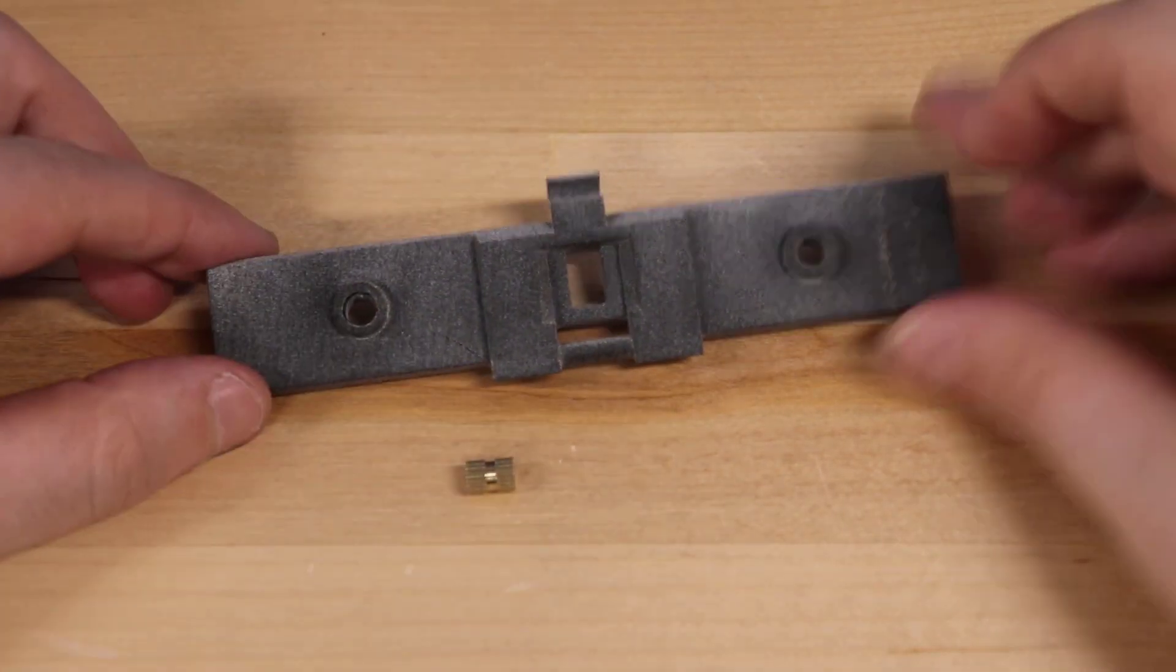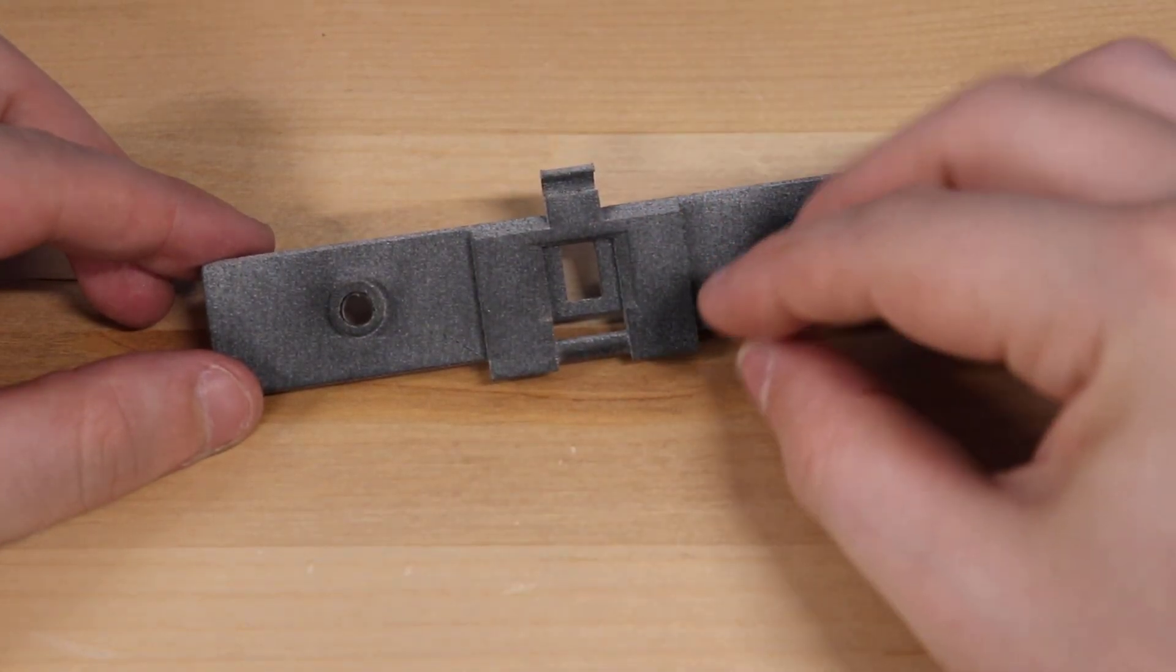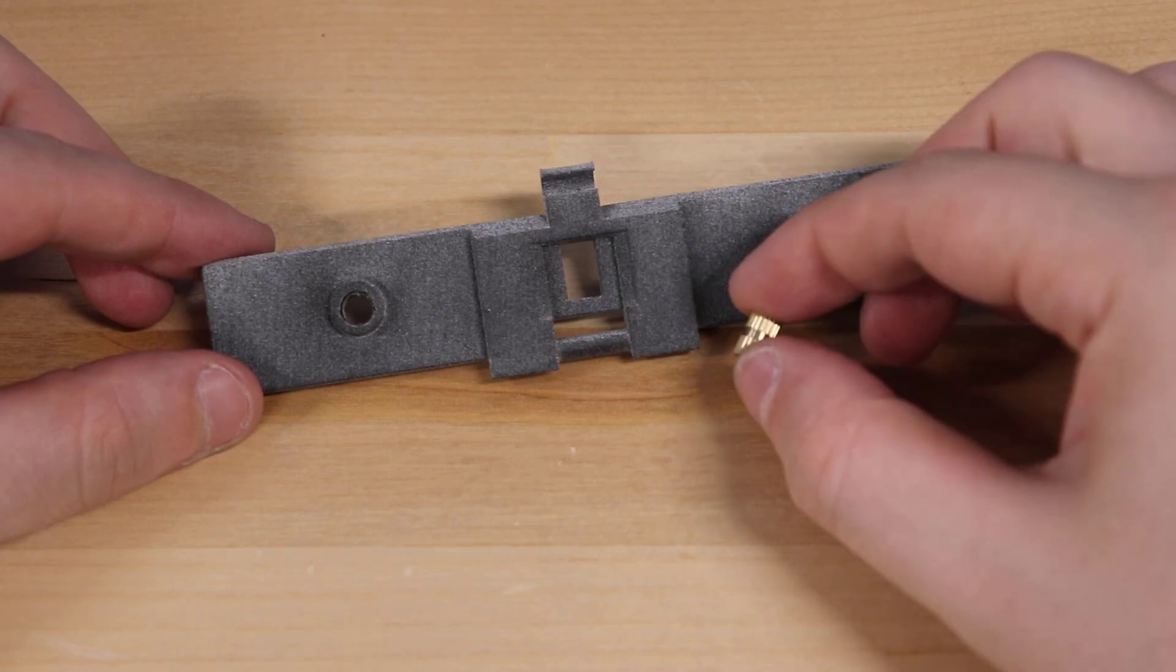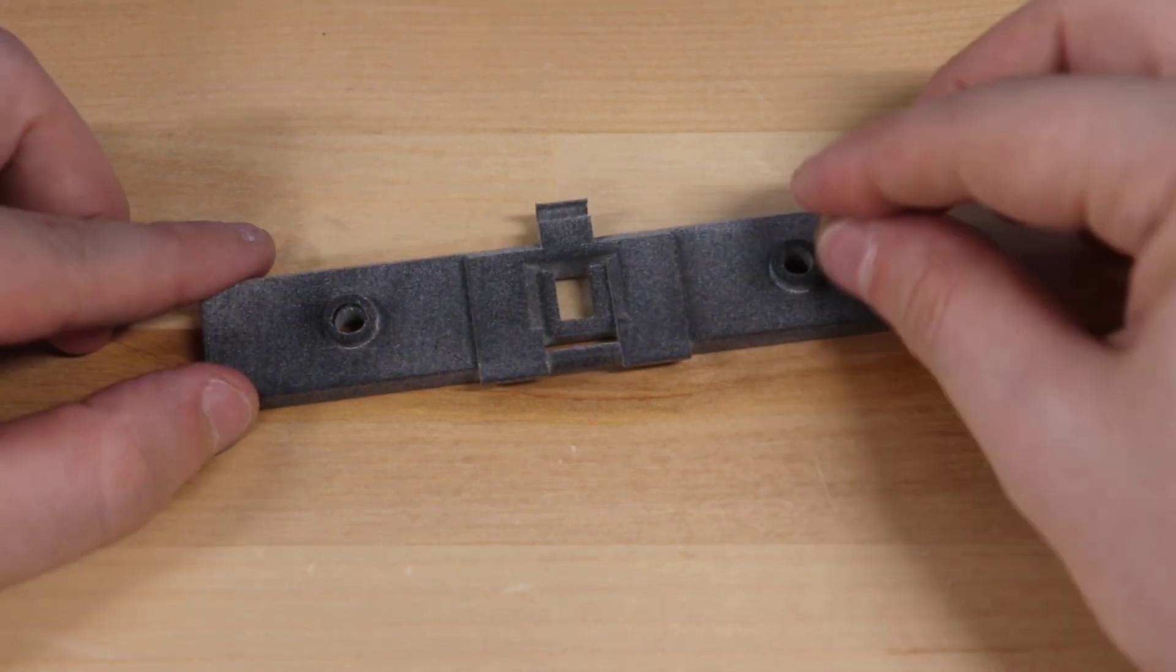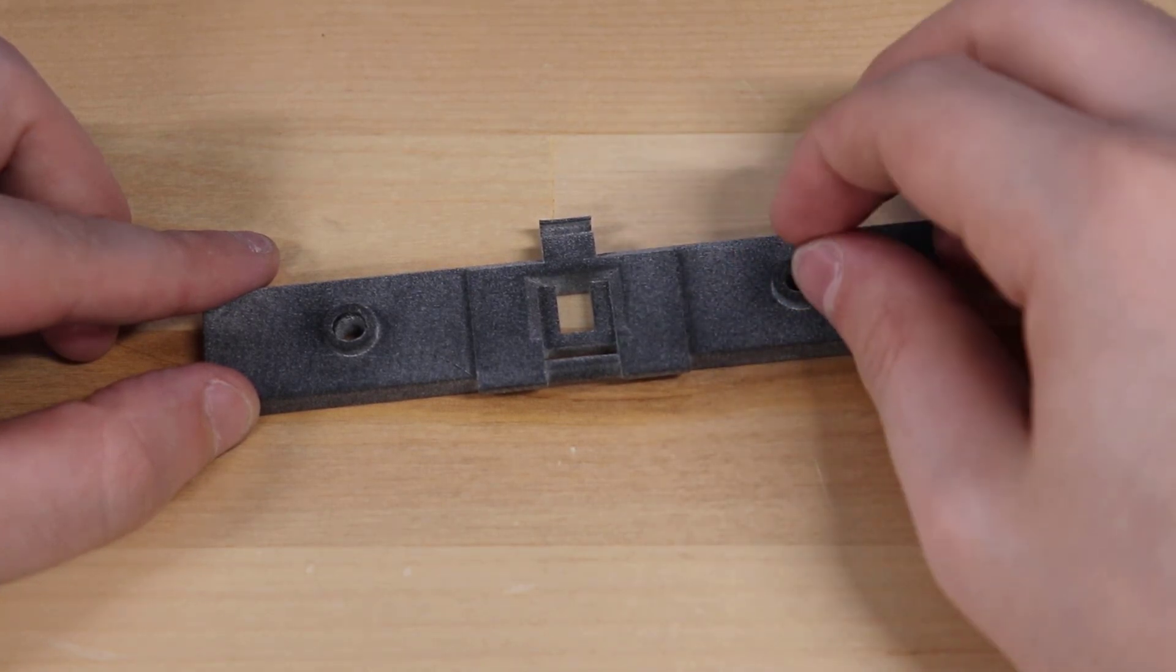Designing the hole with an embossed or filleted rim can also help stabilize the heated insert while it's warming up. The insert we'll be using has a flat side, so it would be very difficult to align it and keep it in place while it's heating up on the hole of this part that doesn't have any kind of rim.